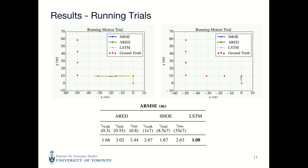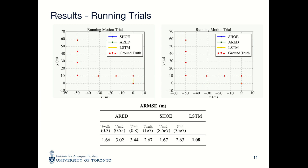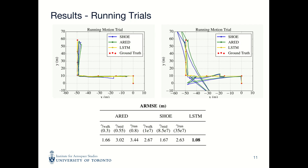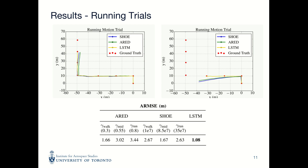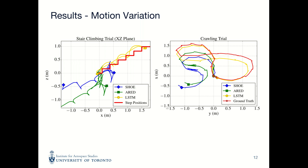Our proposed system also consistently outperforms the fixed threshold detectors for running trials. In both cases, the fixed threshold detectors accumulate a significant amount of error, as the optimal threshold is not well suited to running motions. In contrast, our proposed method detects the majority of zero velocity events, resulting in improved position estimates along the trajectory. Over all motion trials collected, our LSTM-based classifier produced the lowest average position error of 1.08m, or just 0.5% of distance traveled — approximately a 35% reduction in error compared to the best performing fixed threshold detector. We also evaluated our classifier on stair climbing and crawling motions, and while existing methods completely fail during these motions, our proposed method produces accurate trajectories in both cases.